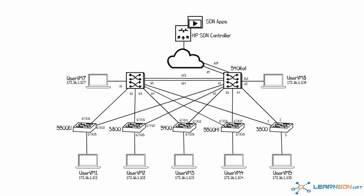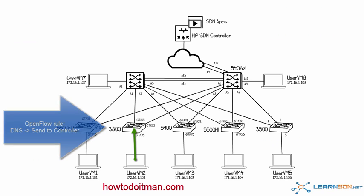When a user tries to go to a malicious website, their traffic is intercepted because of an OpenFlow rule, forwarded to Network Protector, and checked against the database.